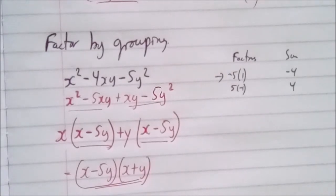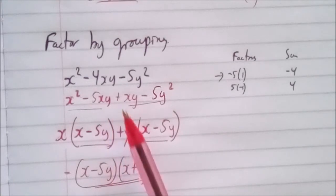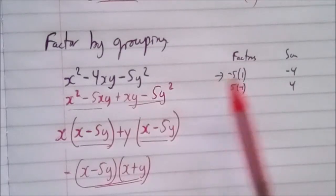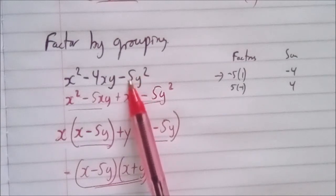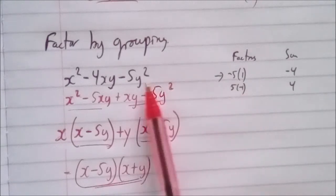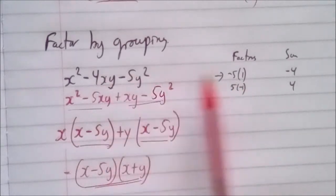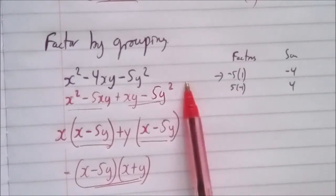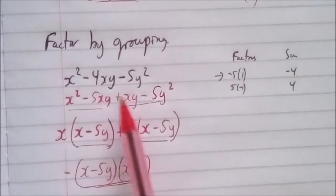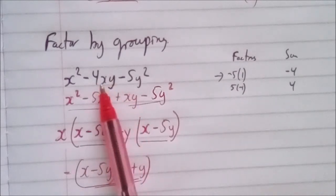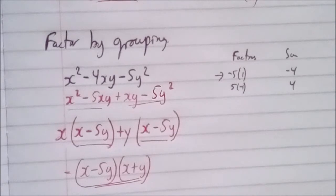Let's review this problem. When factoring problems of this form with two variables, we look at the factors of the last value, negative 5. The only ways to get negative 5 are negative 5 times positive 1 or positive 5 times negative 1. Adding them, only negative 5 and 1 gives us negative 4, which matches our middle term. So we use that combination, remembering to include the variable y in the middle terms.